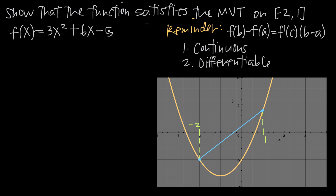You'd also look for square roots where the value underneath could be negative, or a natural log where the argument could be 0 or negative — those make the function undefined and discontinuous. If any such points occurred in your given interval, you couldn't apply the mean value theorem. But here we have a polynomial: it is continuous, it is differentiable, with no problematic points between negative 2 and 1. Therefore, the mean value theorem applies.